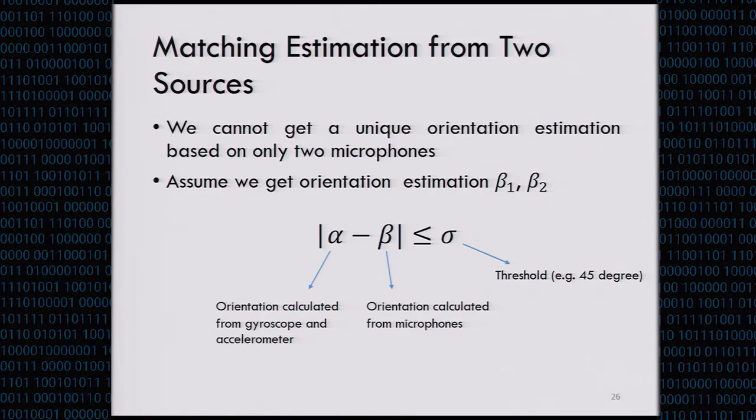In the previous page, we estimated the initial orientation using the motion sensors such as gyroscope and accelerometer. We can also estimate the orientation of a leaving user if we have two microphones. If the orientation estimation by those sensors matches the estimation by the microphones, then we can associate the trace with the target user. If it is not matched, then it's likely to be the attacker's trace. Using two microphones, we cannot get a unique orientation estimation. For example, we can only get two estimations at the same time, beta 1 and beta 2. If there exists an estimation that is sufficiently close to the estimation by the motion sensors as we show the alpha here, then we associate the leaving trace to the target user. In our system, we define a threshold sigma to tackle some estimation error using the microphones. The threshold is set as 45 degrees.